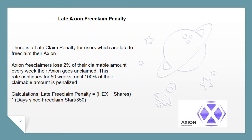Late Axion Free Claim Penalty: There is a late claim penalty for users who are late to free claim their Axion. Axion Free Claimers lose 2% of their claimable amount every week their Axion goes unclaimed. This rate continues for 50 weeks, until 100% of their claimable amount is penalized. The formula: late free claim penalty equals HEX shares multiplied by days since free claim start, divided by 350.